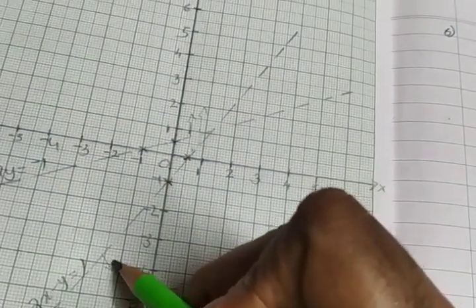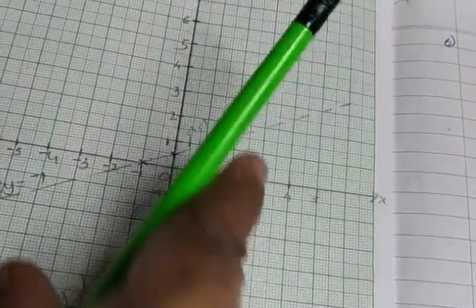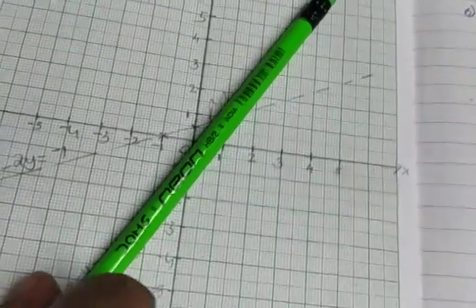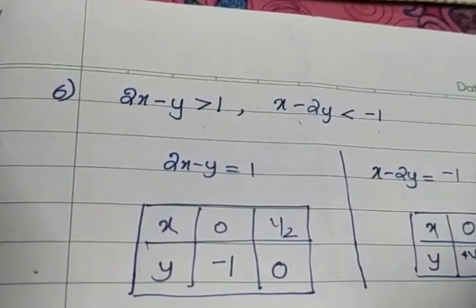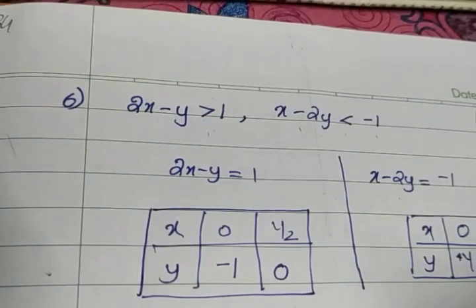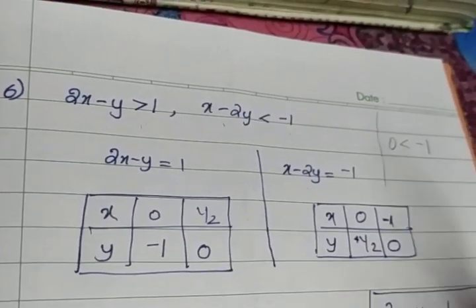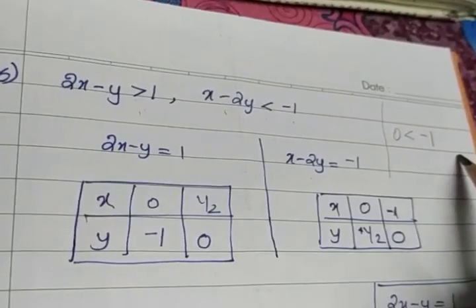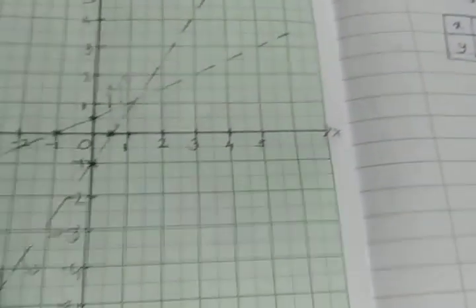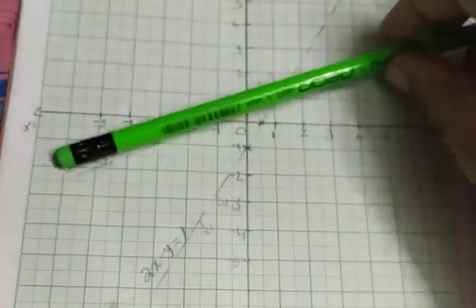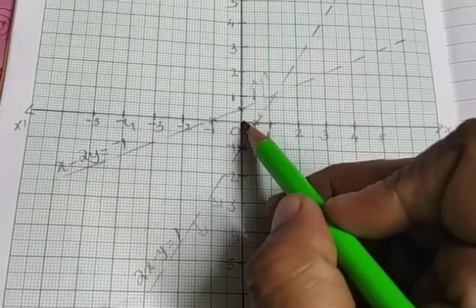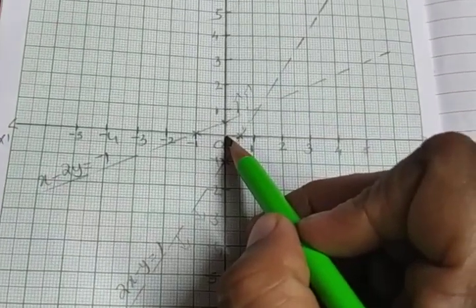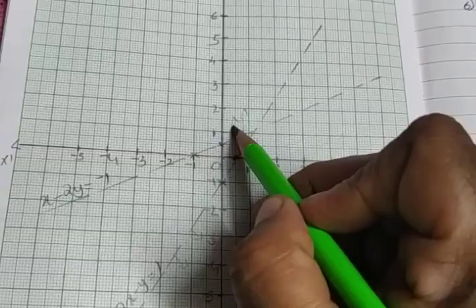For this line, the solution region is below the line. For the second inequality, x minus 2y less than minus 1, if I put (0, 0), I get the inequality 0 less than minus 1. This inequality is also not correct. So the solution region for this line divides the plane into above and below, and since (0, 0) is below the line and the inequality is not satisfied, the solution is above the line.